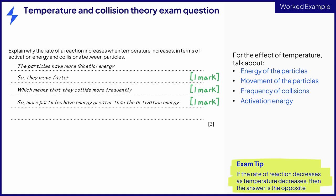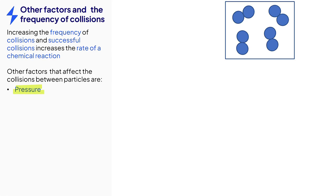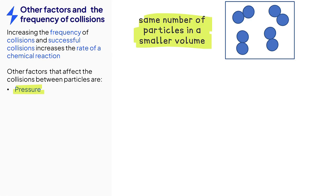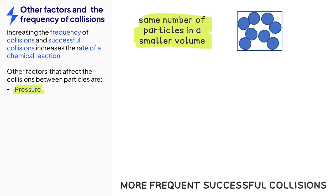You can also be asked about if the temperature decreases and the effect it has on the rate of reaction — essentially your answer will be the opposite. In any chemical reaction, increasing the number of collisions and successful collisions will increase the rate of reaction. The second factor that can affect the rate of reaction is pressure. Increasing the pressure means that there are the same number of particles in a smaller space, leading to more frequent successful collisions.